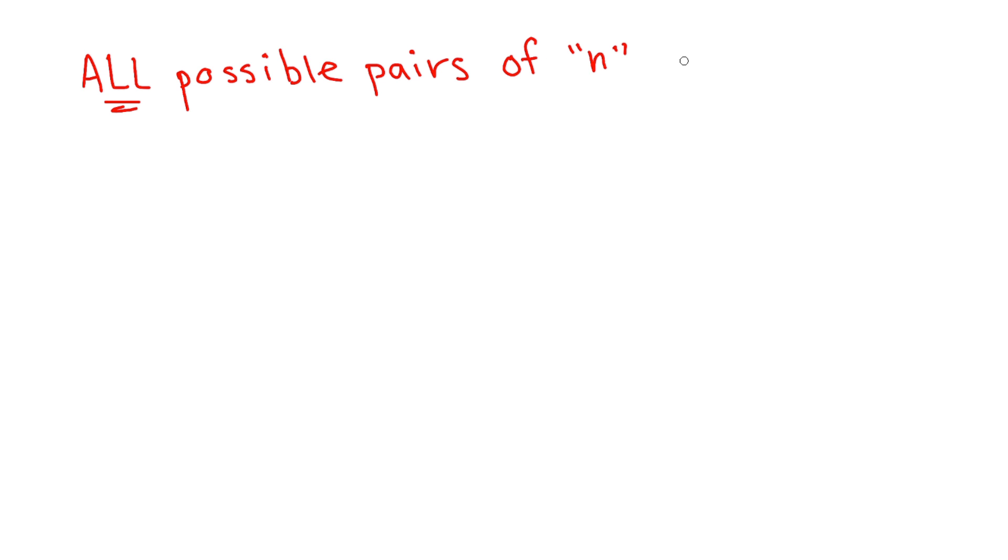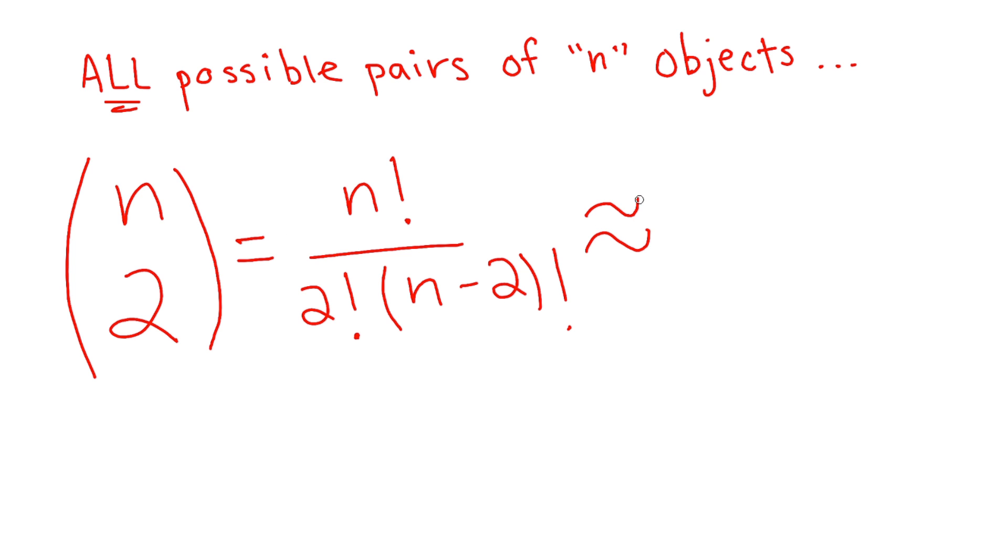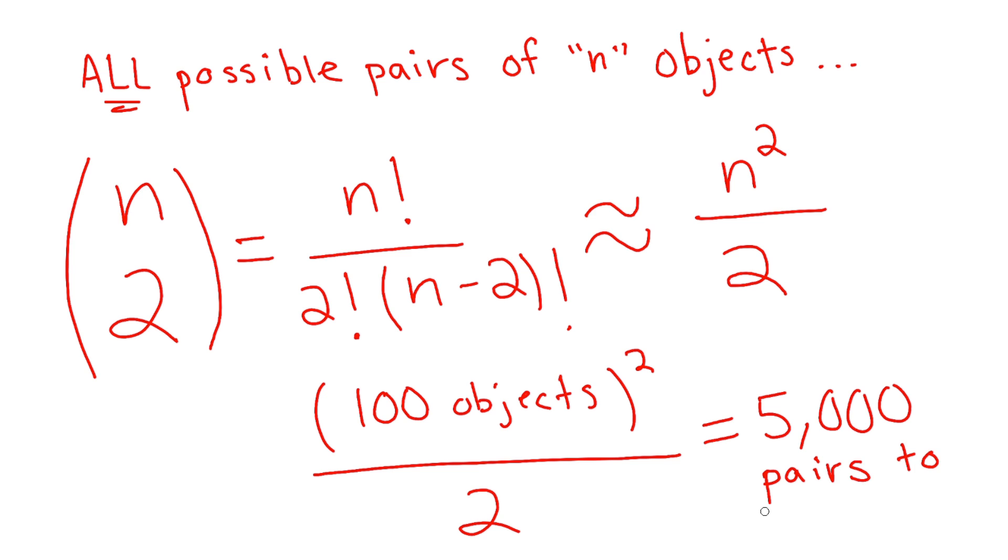If a level has n objects, that's n choose two combinations of pairs that have to be checked. So for 100 objects, that's 5000 pairs that would have to be checked each frame. There are a few ways we can improve performance here, which mainly involves pruning trees.